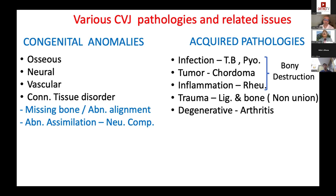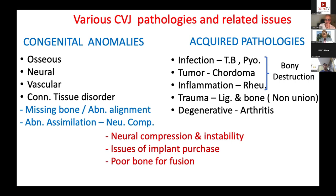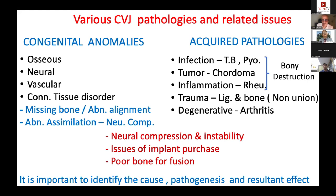Degenerative arthritis at OC1 or C1-C2 is increasingly recognized — patients who carry heavy loads on their skull may present with pain that was previously dismissed. Neural compression and instability remain the main problems in CVJ pathology. Issues of implant purchase must be addressed, along with poor bone quality, high mobility, and the need for meticulous fusion. Identifying the cause, pathogenesis, and resultant effect is critical.